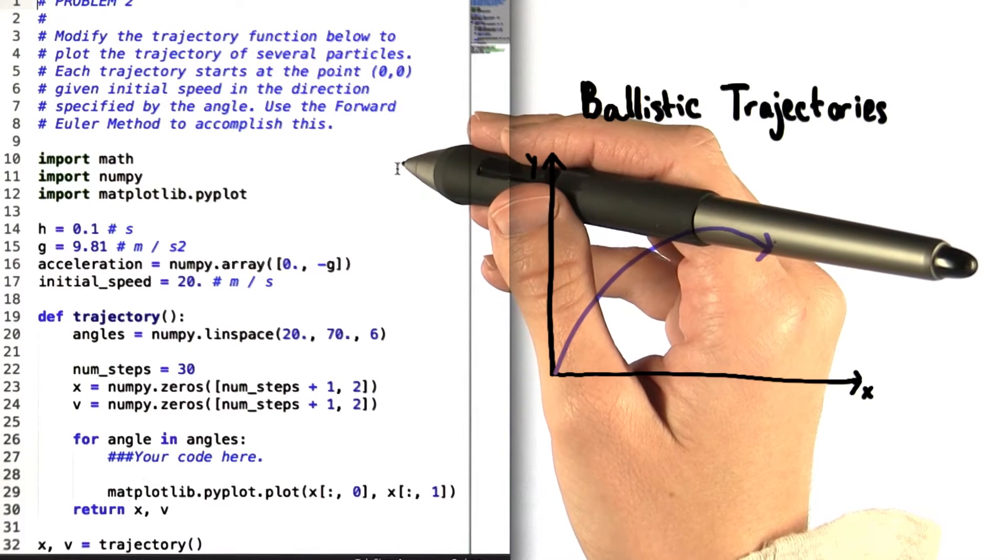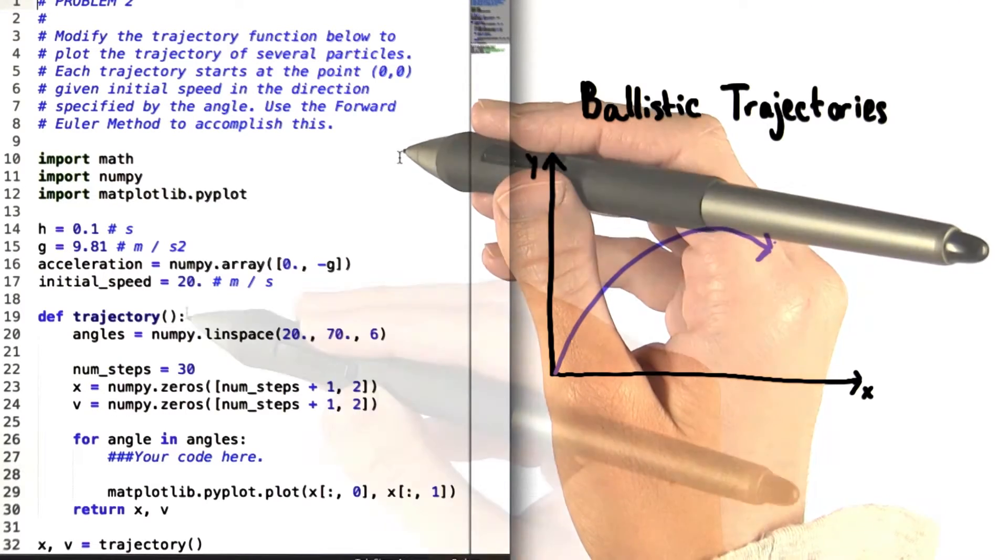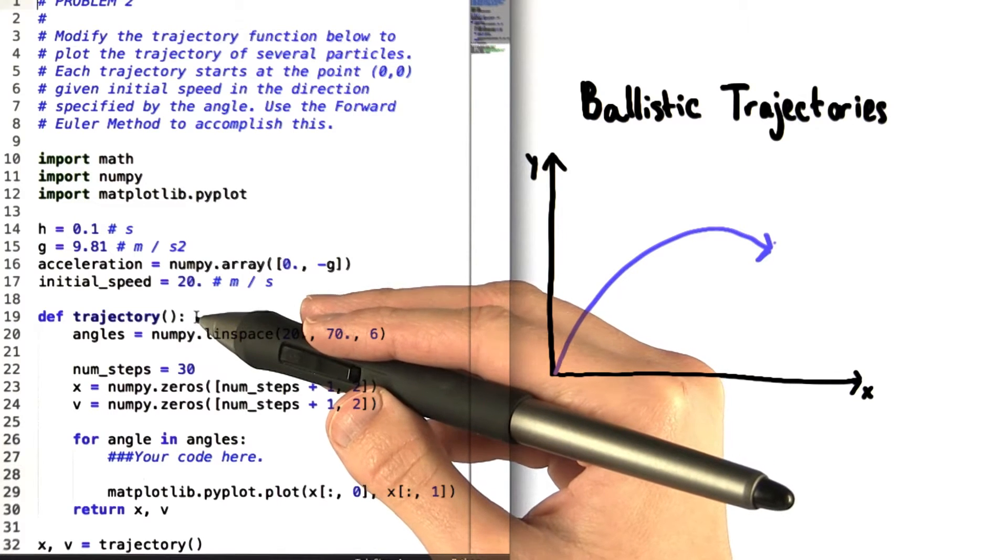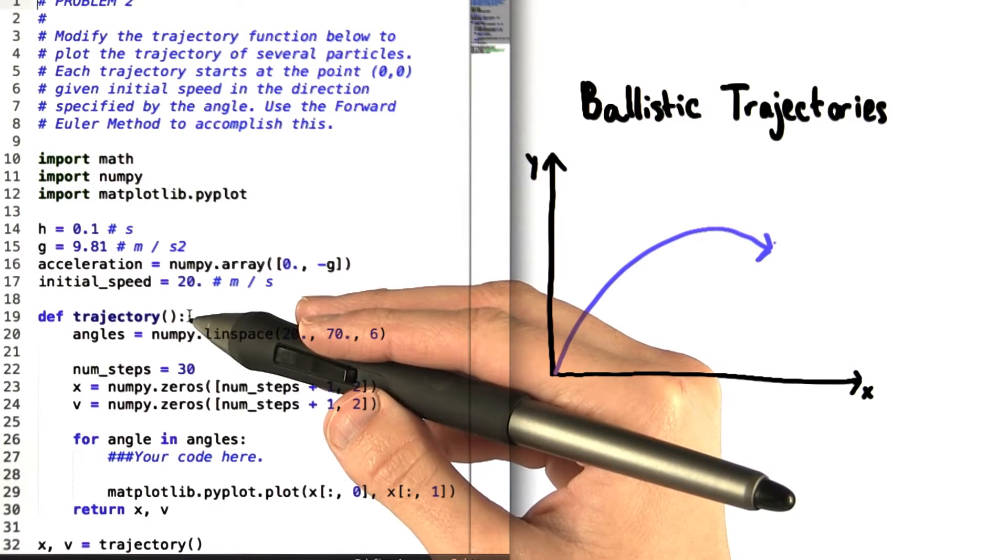So now it's time for us to get some practice with an application of the forward Euler method. This time we've defined a function for you called trajectory that's going to determine the trajectory of a particle.